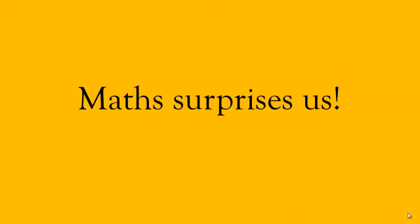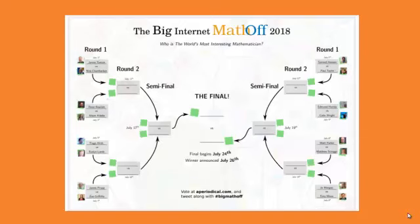But first, I want to show another example of the power of mathematics to surprise us by showing us something which we might not have expected. So in the Big Internet Math Off, this is the last of the first round matches. Seven competitors are already through to the quarterfinals, and now this final match is to be decided.